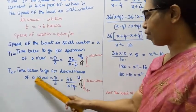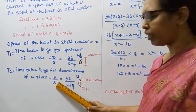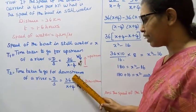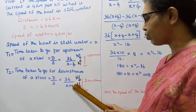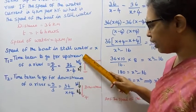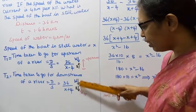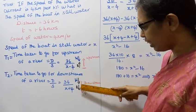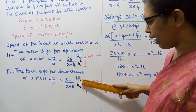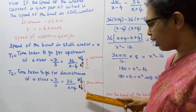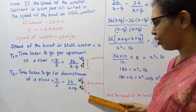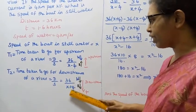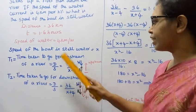T2, time taken to go downstream of a river, equals distance by speed. Distance is 36, speed is x plus 4. The water direction and boat direction are the same, so it's positive. 36 by x plus 4.